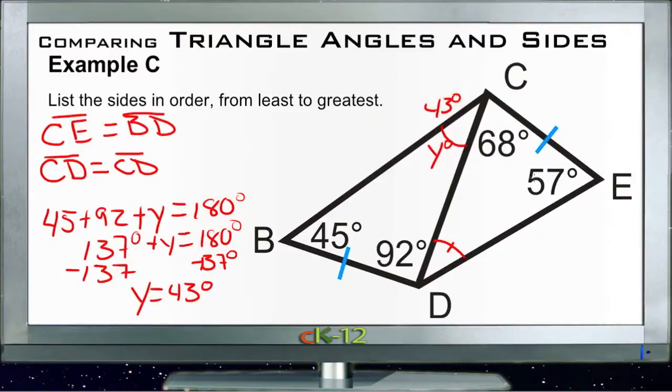And then if we calculate our other one, we get 68 degrees plus 57 degrees, and we'll call this angle X, plus X degrees is equal to 180. Then 68 and 57 is 110 and 115, so X plus 115 is equal to 180, which means that X is 55.